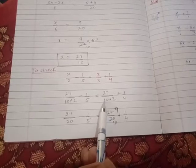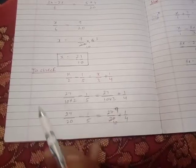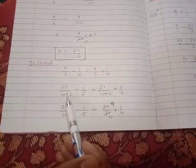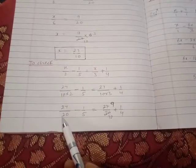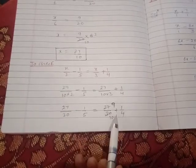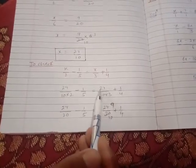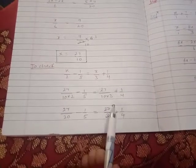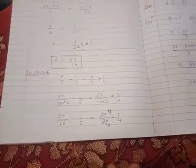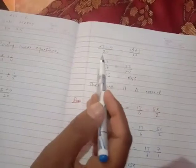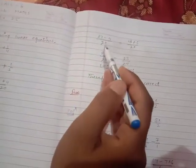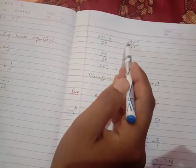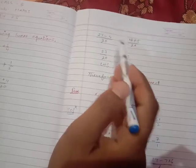This will become 27/20 - 1/5. 27 ÷ 3 = 9, so 9/10 + 1/4. Now 27 - 4 upon 20, and on the right-hand side 18 + 5 upon 20. 27 - 4...